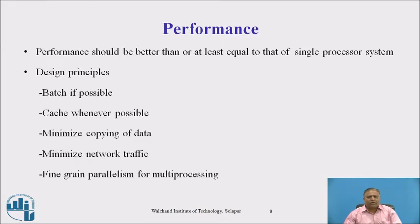Performance should be better than or at least equal to that of a single processor system. Design principles include: making jobs batch if possible, using cache whenever possible, minimizing copying of data, minimizing network traffic, and using fine-grained parallelism for multiprocessing. All these help increase the performance of the distributed system.